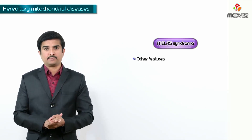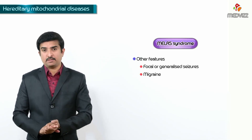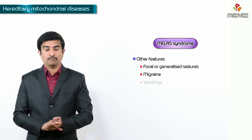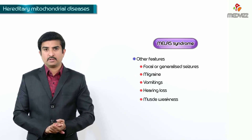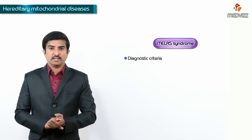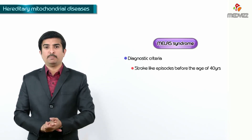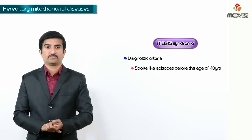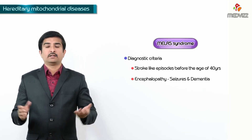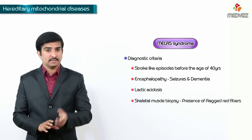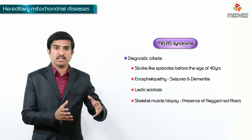Other common features include focal or generalized seizures, recurrent migraine-like headaches, vomiting, hearing loss, and muscle weakness. The original diagnostic criteria for MELAS required stroke-like episodes before the age of 40, along with encephalopathy characterized by seizures or dementia, and either blood lactic acidosis or the presence of ragged red fibers in a skeletal muscle biopsy. All these are important criteria for the diagnosis.